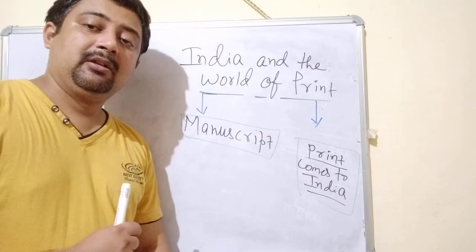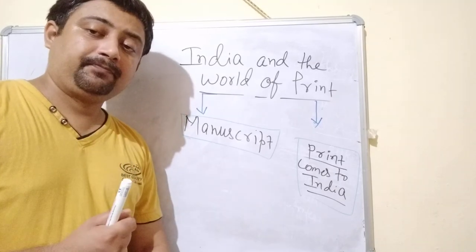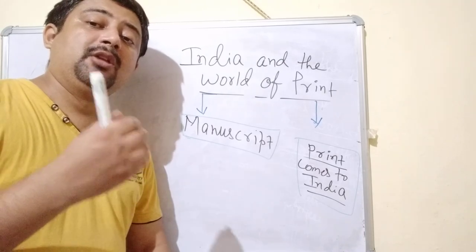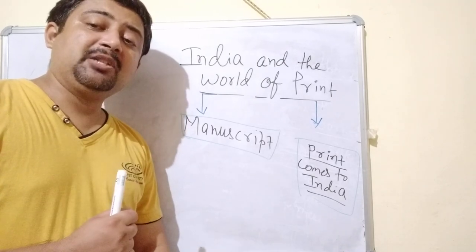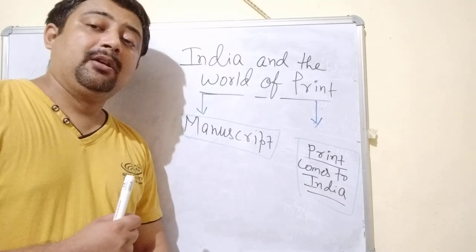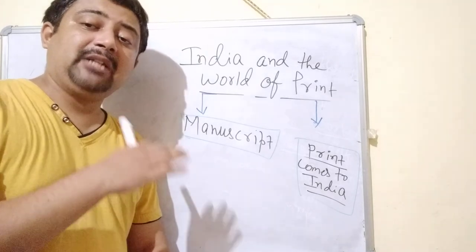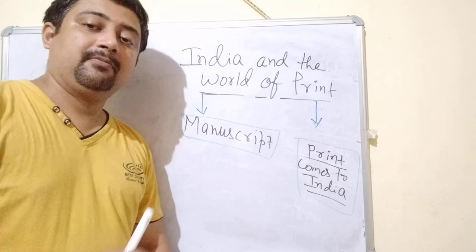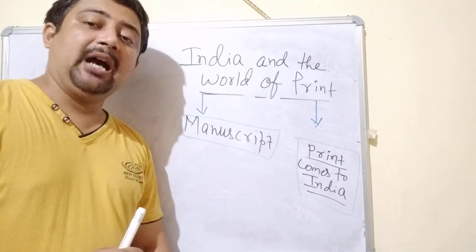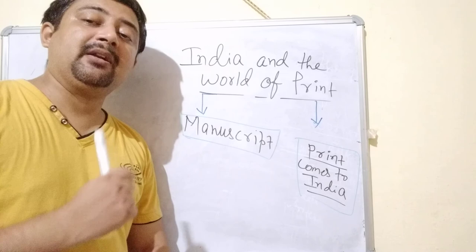Finally, James Auguste Hickey was punished. After that, the Britishers also granted permission to local Englishmen to publish their own newspapers, so that they could counter the image established by the Bengal Gazette. This is how a print war started in India — one side criticizing the British administration, the other side supporting them.